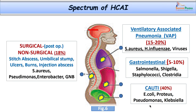Wound infections are another very commonly encountered group, classified as surgical and non-surgical. Altogether they contribute up to 18 percent of healthcare associated infections. Non-surgical wound infections can be simple stitch abscesses, umbilical stump infections, ulcers from interventions, burns, and injection abscesses.